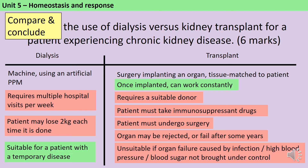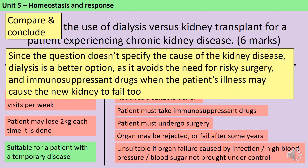We could argue the case for either side — dialysis or transplant — but it's really important to write a conclusion to get the final mark. In this instance, since we haven't specified the cause of the kidney disease, dialysis is the better option because it avoids the need for risky surgery and immunosuppressant drugs, especially when it's possible that the patient's underlying illness may cause the new kidney to fail as well.